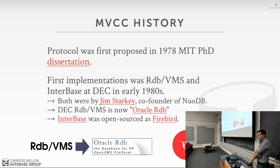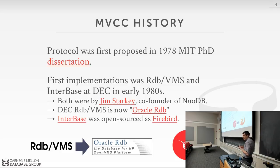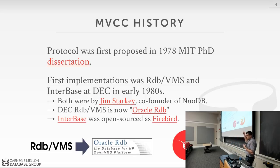The idea of multi-version concurrency control, or MVCC as it's normally called, goes back to the 1970s. The first reference to this idea was in a dissertation by a PhD student at MIT in 1978. Then there's a bunch of papers from Phil Bernstein in the early 1980s that reference this dissertation as the first example of multi-version concurrency control.